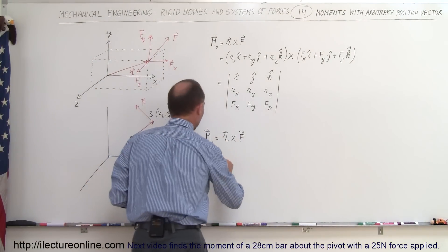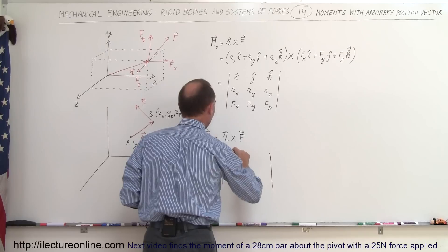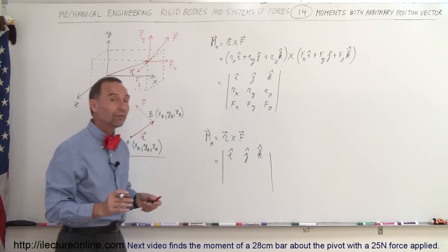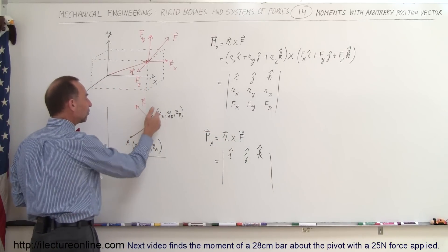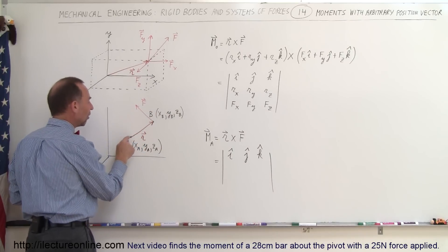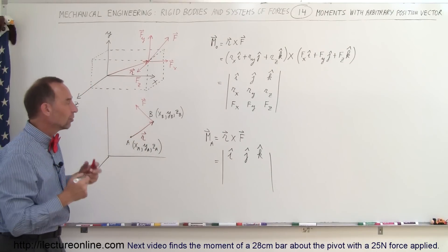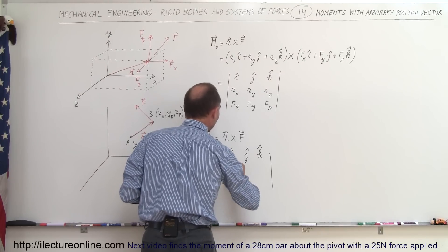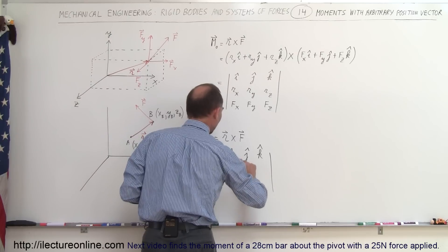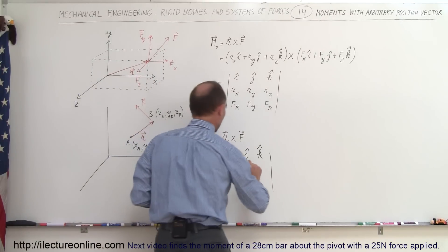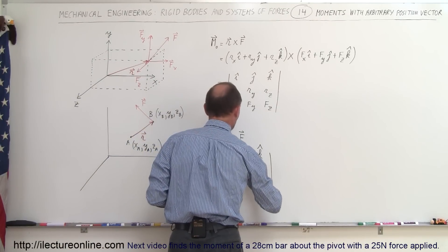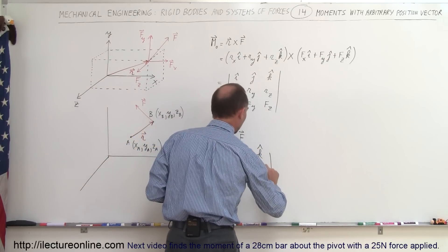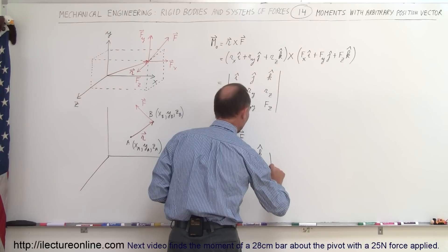Our matrix will look like this. We'll still have the I, J, and K unit vectors, but for the magnitude of the X, Y, and Z components of the R vector, we simply subtract the difference between the positions from the point of rotation to the point at which the force is acting. So the X component is X sub B minus X sub A, the Y component is Y sub B minus Y sub A, and the Z component is Z sub B minus Z sub A.